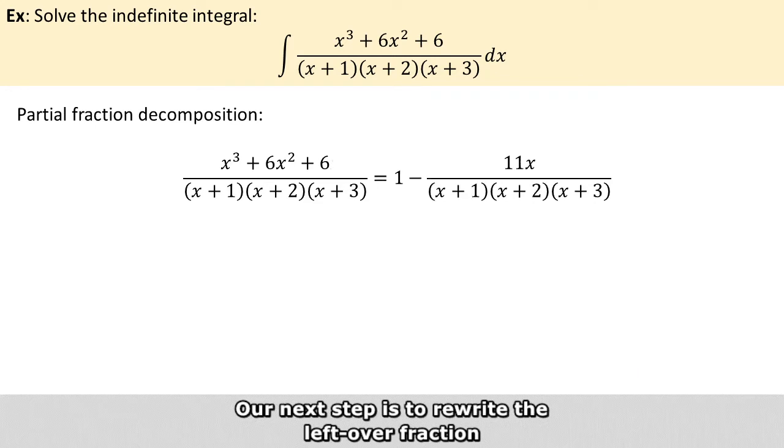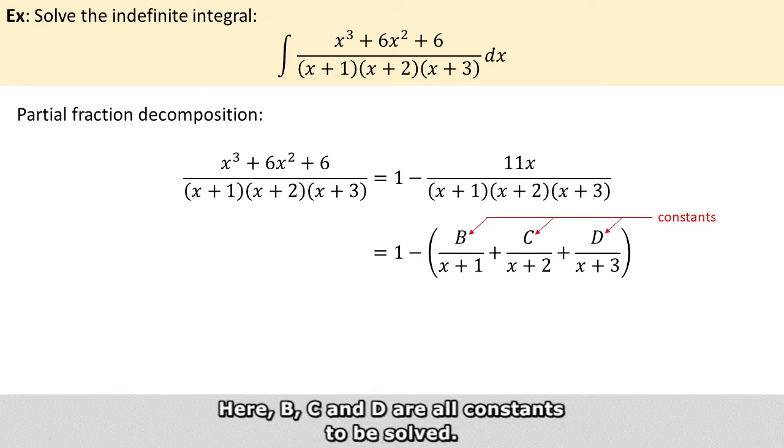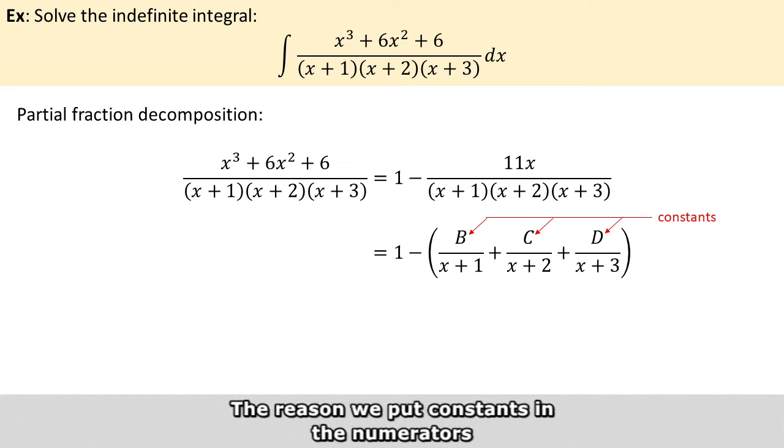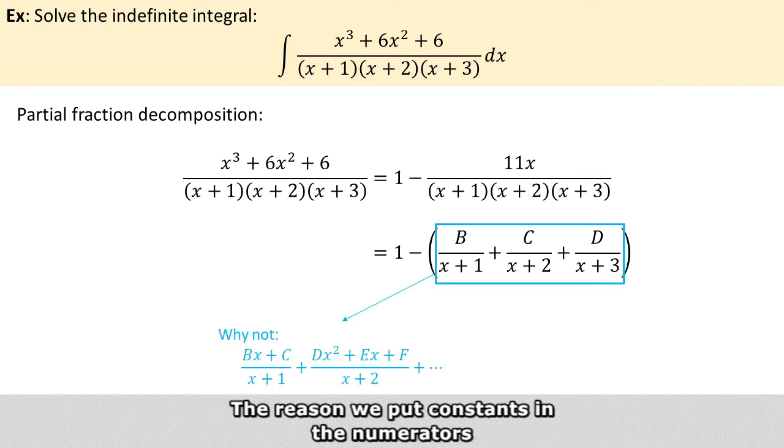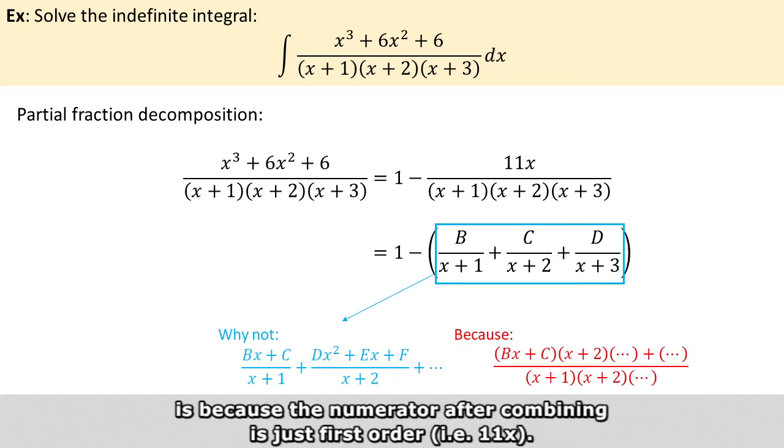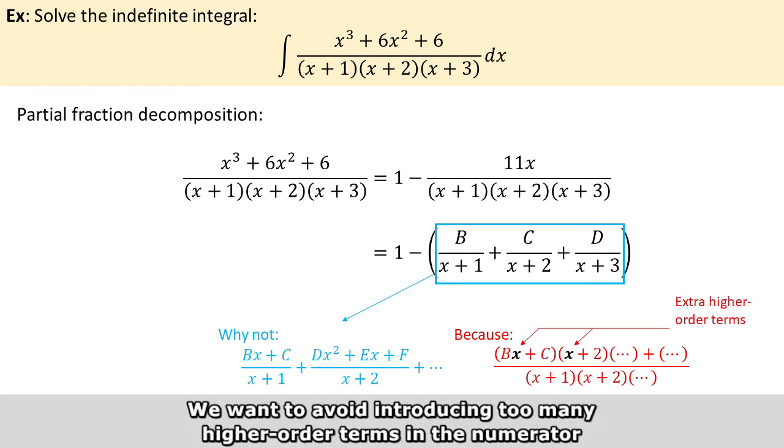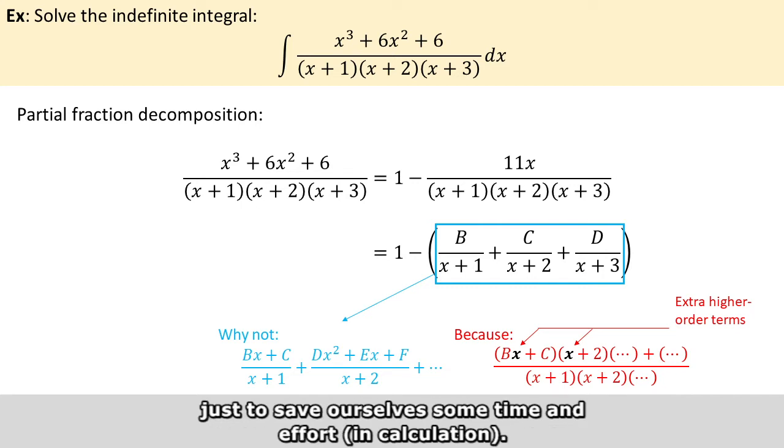Our next step is to rewrite the leftover fraction into the sum of three fractions based on factors in the original denominator. Here, B, C, and D are all constants to be solved. And the reason why we put a constant in the numerators, instead of some higher-order expressions of x, is because the numerator after combining is just first-order, and we want to avoid introducing too many higher-order terms in the numerator, just to save ourselves some time and effort.